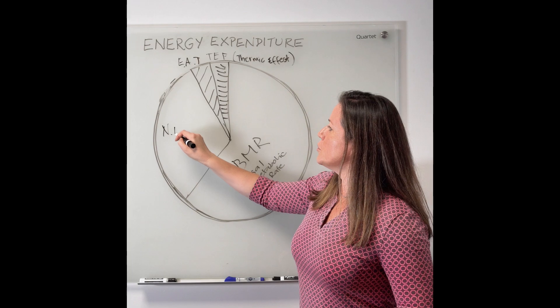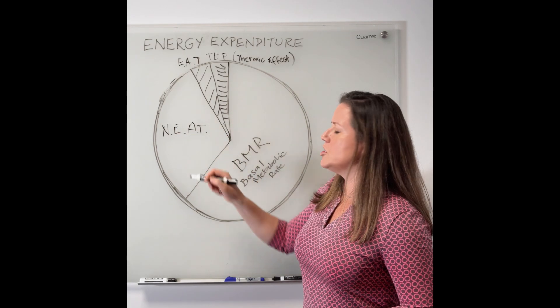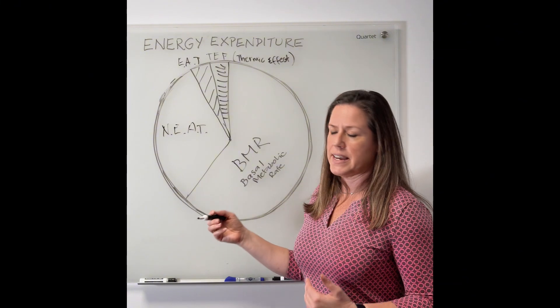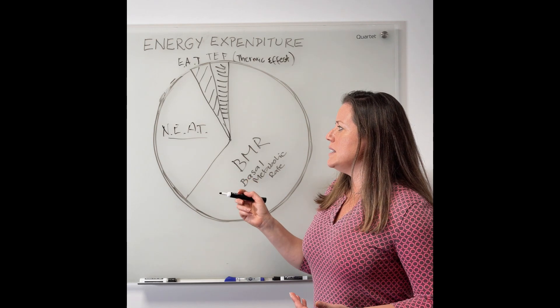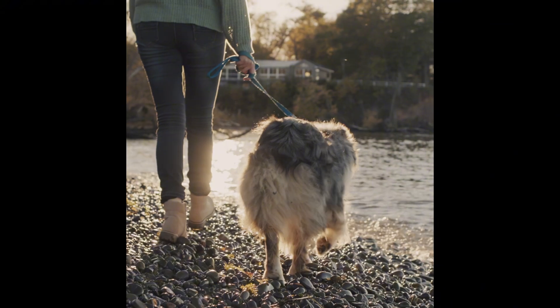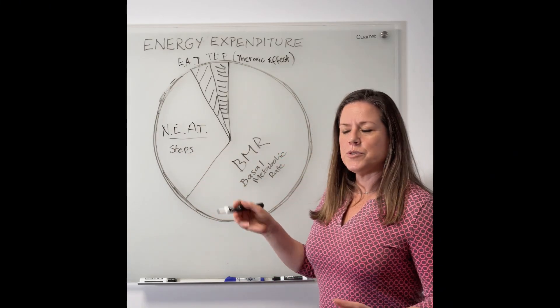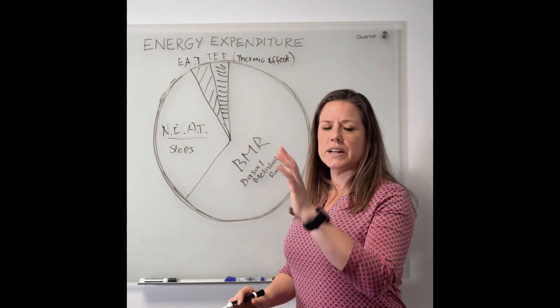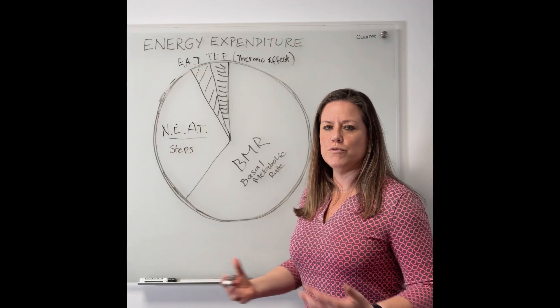And the rest we are labeling NEAT, which is non-exercise activity thermogenesis. So what is non-exercise? It would be steps like walking the dog, going to buy your groceries, parking farther away, walking up and down the stairs, gardening outside, just basic activity and movement.